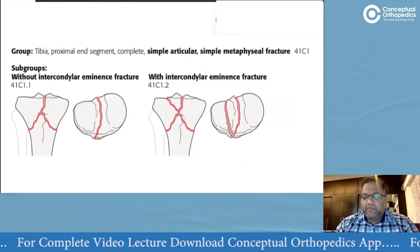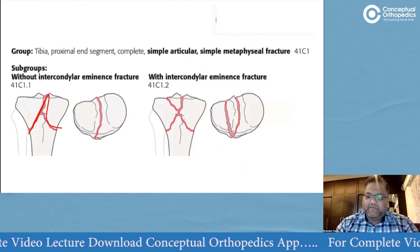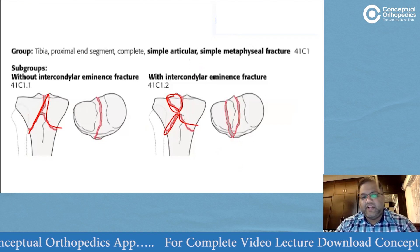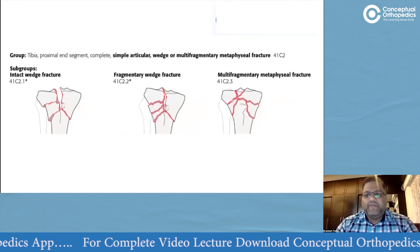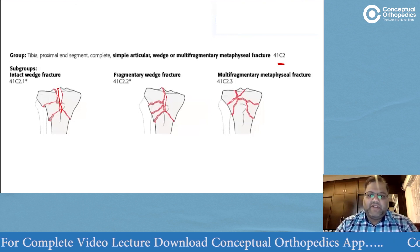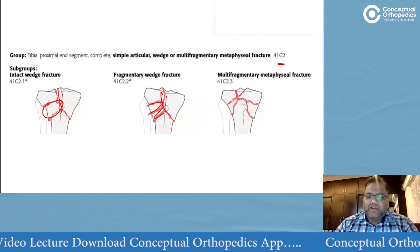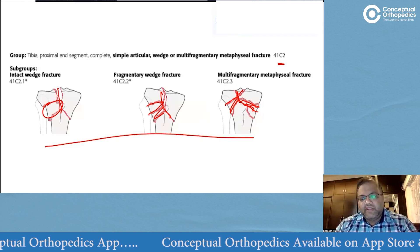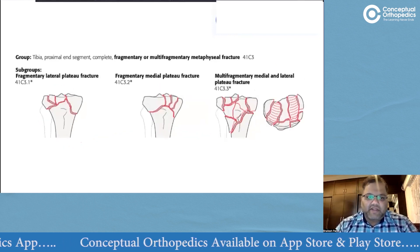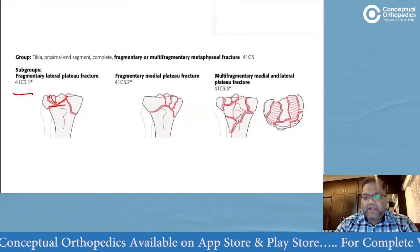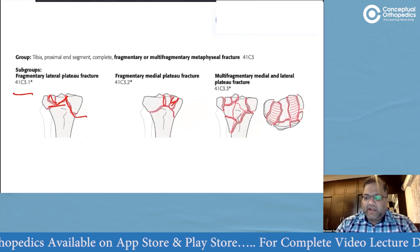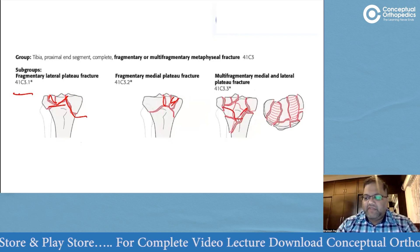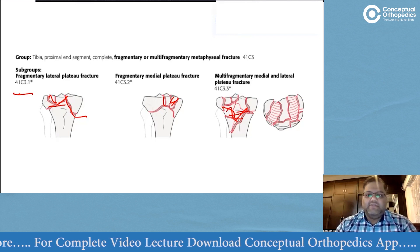For Type C intraarticular fractures of the proximal tibia: C1 is articular simple with metaphyseal simple, with or without a separate intercondylar eminence fracture (C1.1 and C1.2). C2 is articular simple with a multifragmentary metaphysis — wedge, multifragmentary wedge, or fully multifragmentary (C2.1–C2.3). C3 indicates a multifragmentary articular component: lateral plateau multifragmentary is C3.1, medial plateau is C3.2, and complex multifragmentary of the entire metaphysis and articular surface is C3.3.